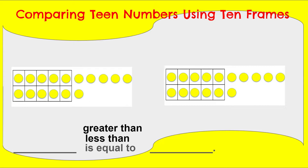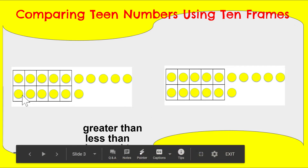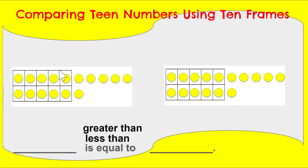So comparing teen numbers using a 10 frame, we need to start similar to how we did before with our pictures and we need to count each group. So I don't have to touch and count each one because I know how many are there — 10. So I could just count on.